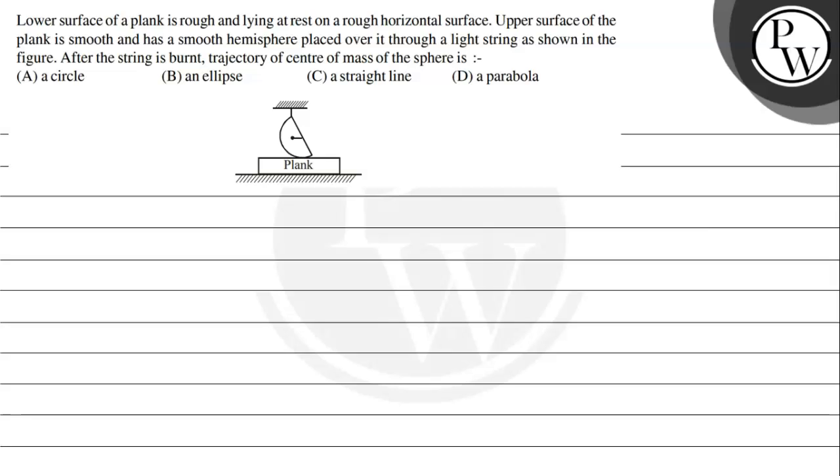Hello. Let's read the question. The question says lower surface of a plank is rough and lying at rest on a rough horizontal surface. Upper surface of the plank is smooth and has a smooth hemisphere placed over it through a light string as shown in the figure.